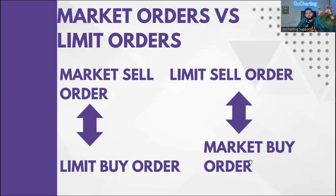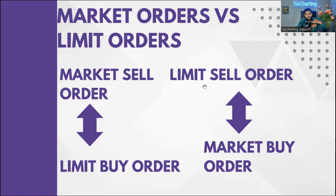Before going to the chart, one more important point: sometimes the market is moving and sometimes it is consolidating. It is market sell or market buy orders which actually move the market up or down, while limit buy and limit sell orders stall the market and keep it in a range. We will understand these in more detail when we cover auction market theory. Now let's go to the chart to see the depth of market and footprint charts.